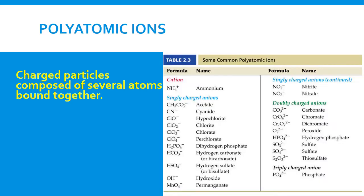Here you see a list of some common polyatomic ions. You have one positively charged one, which is a cation called ammonium. You have some singly charged anions, meaning their charge is negative one. Doubly charged anions with a charge of negative two, and triply charged anions with a charge of negative three. These are just some common ones.